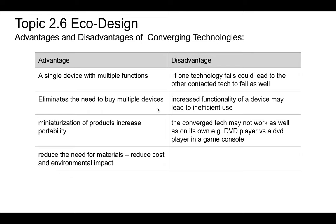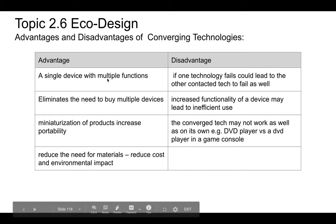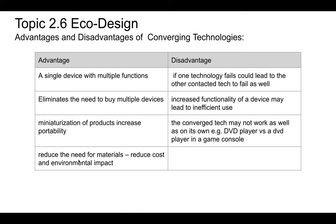Converging technology also reduces the need for materials, cost, and environmental impacts. However, a key disadvantage is that if one technology fails, the others can fail as well — if the scanner breaks, the copier and printer may also stop working.